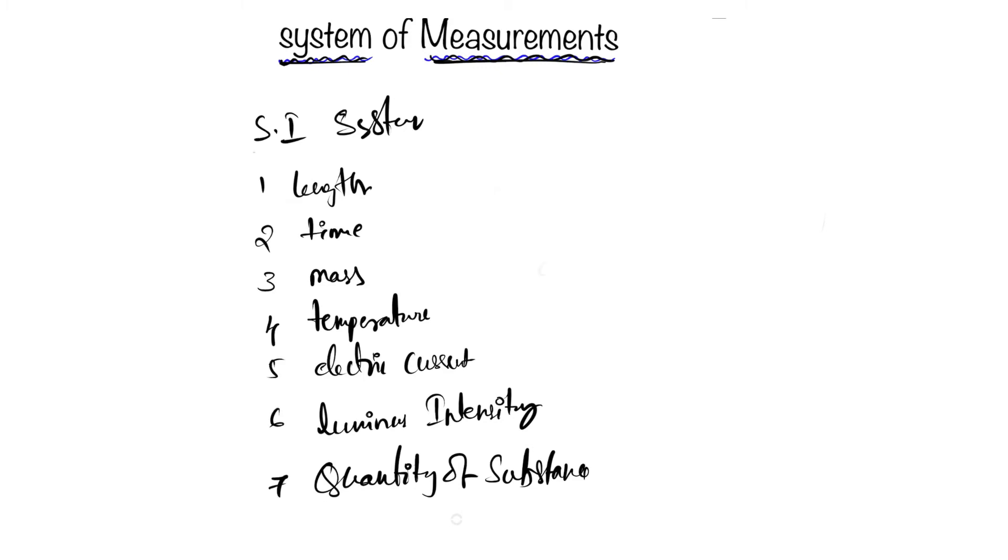the seven basic units. From these seven basic units we can derive all the units that exist in the world. That's why the SI system is predominant—most countries use it.